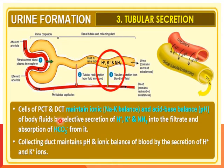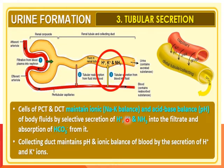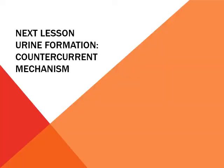The last process of urine formation is tubular secretion. The cells of the PCT and DCT maintain the ionic sodium-potassium balance and acid-base balance of body fluids by selective secretion of hydrogen ions, potassium, and ammonia into the filtrate, and absorption of bicarbonate from it. The collecting duct maintains the pH and ionic balance of the blood by secretion of hydrogen ions and potassium ions.